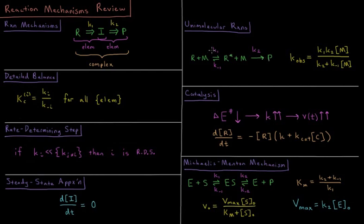This has rates of forward rate K1, reverse rate K-1 and the second rate constant K2 where our observed rate constant for the reaction in terms of our reactant here is equal to K1 K2 times the concentration of our collision partner divided by K2 plus K-1 times the concentration of our collision partner.